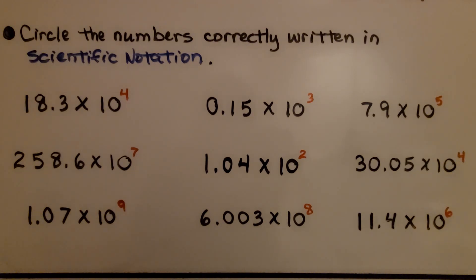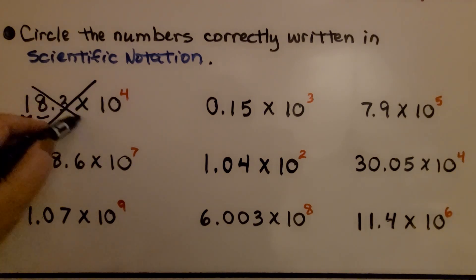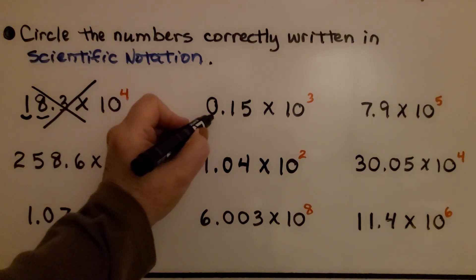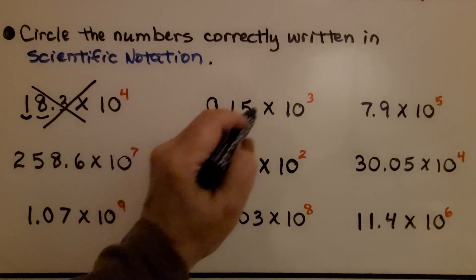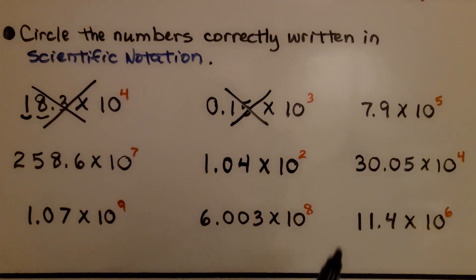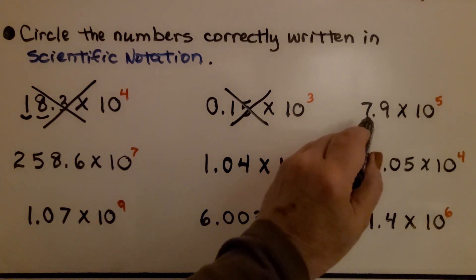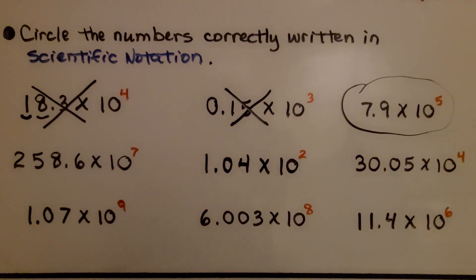Here it's telling us to circle the numbers correctly written in scientific notation. Remember, we need to have one digit in the ones place, then the decimal point. This first one has two digits — something in the ones place and the tens place — so that's not in scientific notation. The next one has something in the ones place but it's a zero, which doesn't count — zero is not greater than or equal to one, so that's not in scientific notation. Here we have 7.9 times 10 to the 5th power — yes, we have a digit that is greater than or equal to one and less than ten, so this is written in scientific notation.